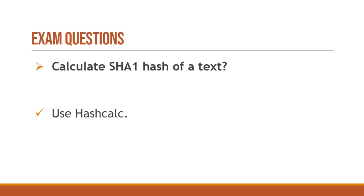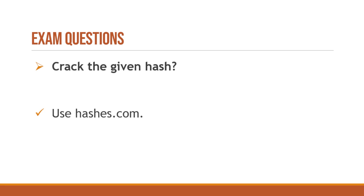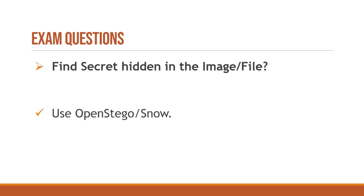To calculate the SHA1 hash of a text, use HashCalc, which is also on the Windows box — just input the text and it generates the hash. To decrypt a hidden volume and find a secret file, use VeraCrypt; whenever anything related to volumes comes up, VeraCrypt is the tool. For cracking a given hash, I prefer hashes.com — go to your personal laptop, go to hashes.com, copy the hash from your VM, paste it in, and it will crack the hash easily.